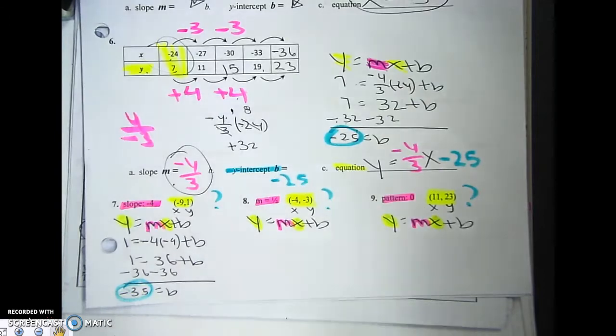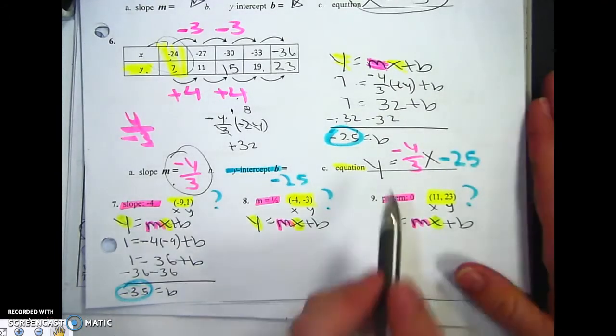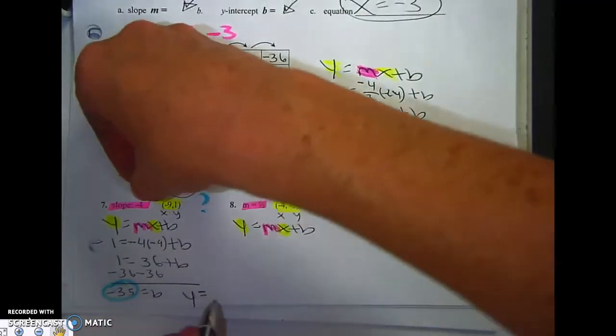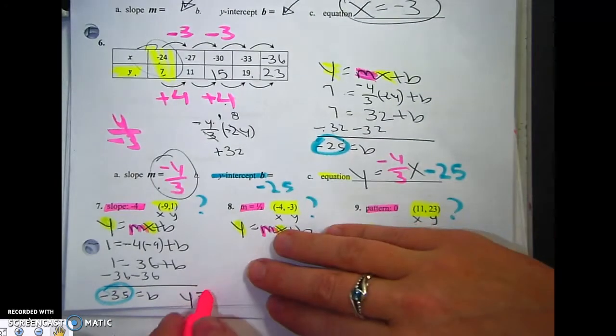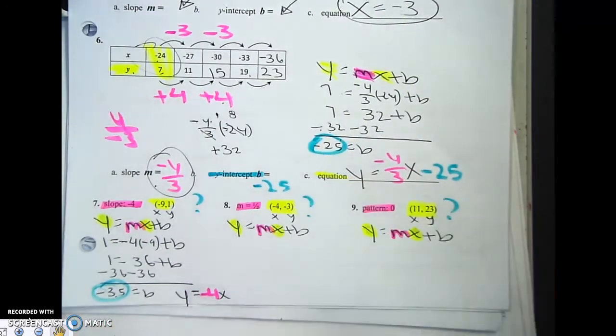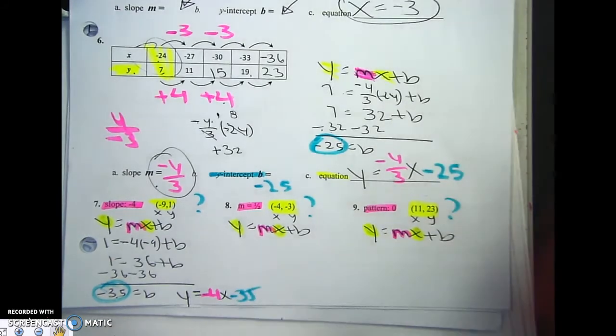Now here's the important part. They didn't give me a cute little line that said equation, so I'm just going to have to write the equation. Y equals negative 4 x minus 35. Alright.